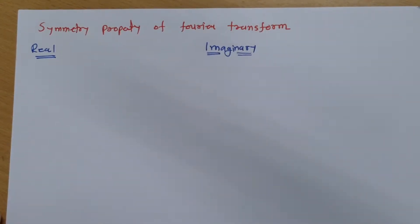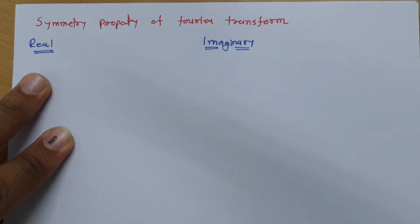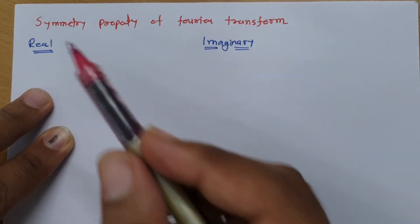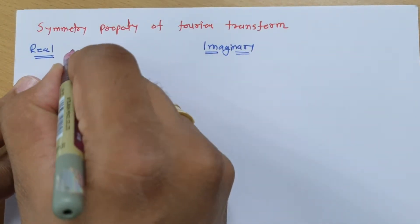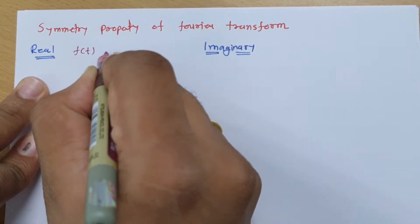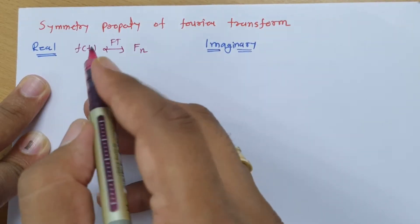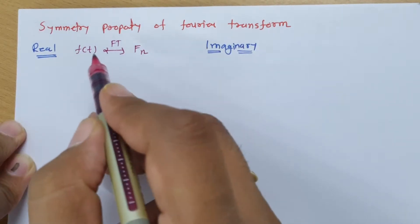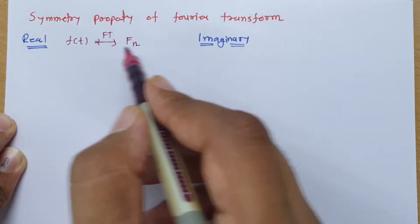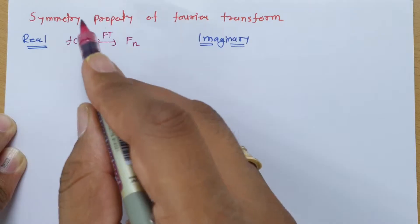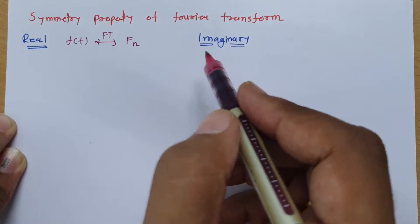Welcome to the signal and system lecture series. In this session, I will be explaining the symmetry property of Fourier series. I will cover how to apply the symmetry property for both real signals and imaginary signals.